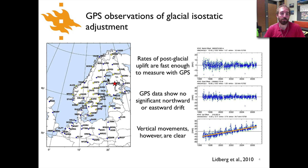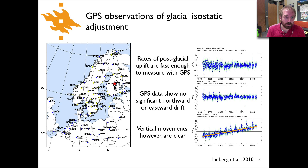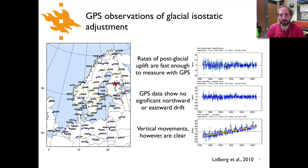Over this time period there have been a number of sites where GPS has been used to measure the motion of the earth's surface. We can look at one site in particular — the KIVE site, shown here by the red star — and we have the three components of motion for this GPS instrument over about 10 years of data. The top plot shows north offset and beneath that is the east offset. In both cases you can see the data falls basically right along the zero millimeters offset line — there's a little wiggling but no trend, so we don't see any significant movement to the north or to the east.